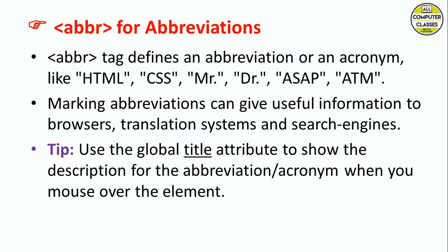The next tag is abbr — this stands for abbreviation. The abbr tag defines an abbreviation or an acronym, like HTML or CSS. Making abbreviations can give useful information to browsers, translation systems, and search engines. There is a tip: when using the abbreviation tag, we can use the global attribute 'title' to show the description of the abbreviation.